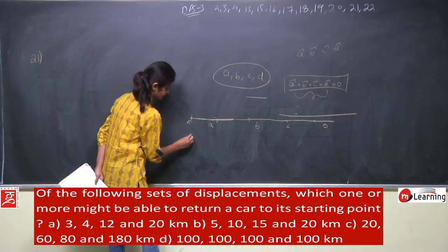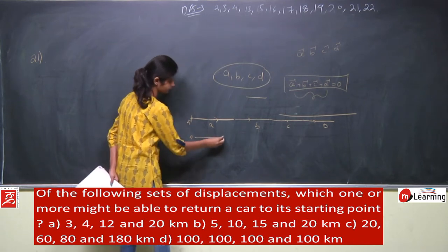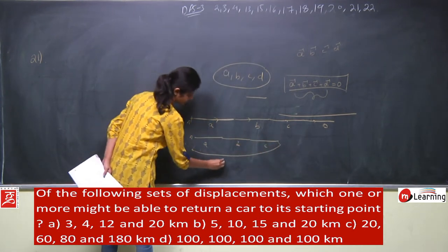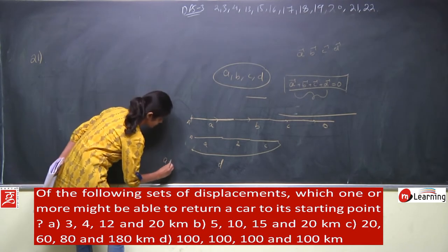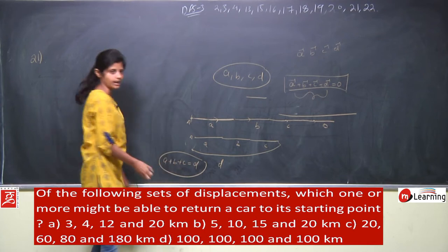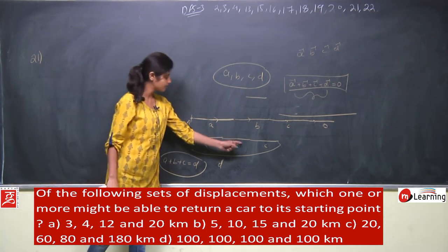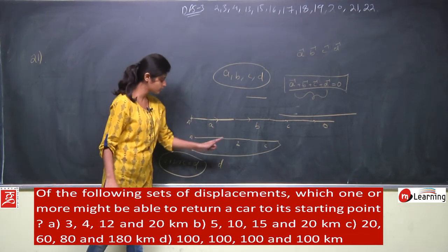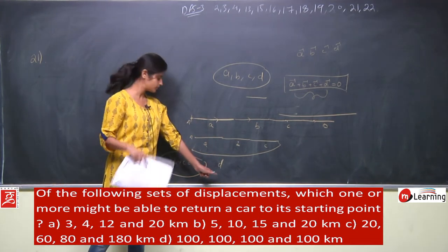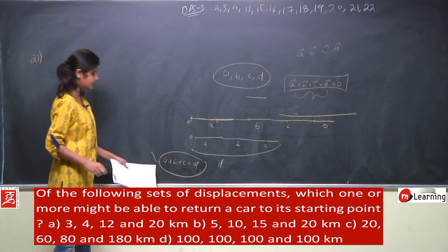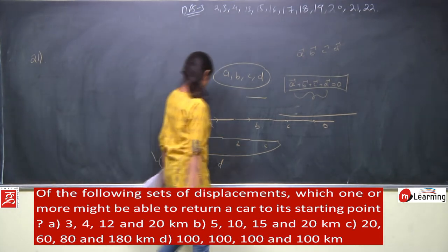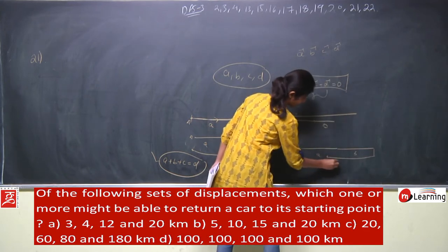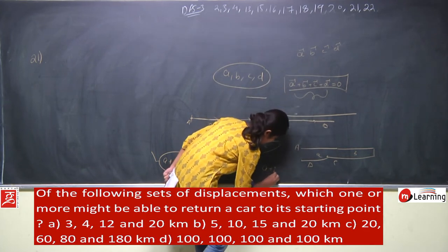Consider two scenarios: In the first, the person moves forward A, then B, then C, then comes back D — giving A + B + C = D. In the second, the person moves forward A and B, then backward C and D — giving A + B = C + D. If the given values satisfy either of these two conditions, displacement can be zero; otherwise it cannot.